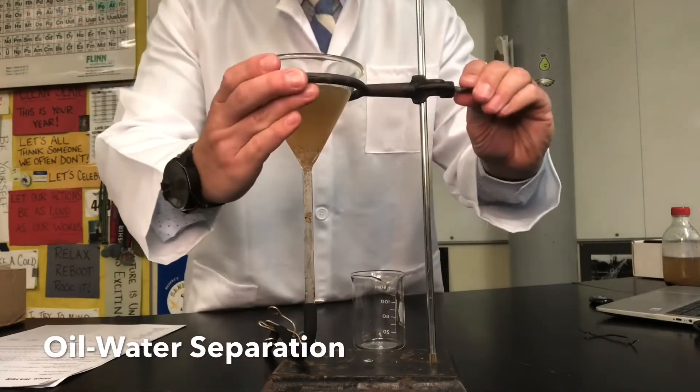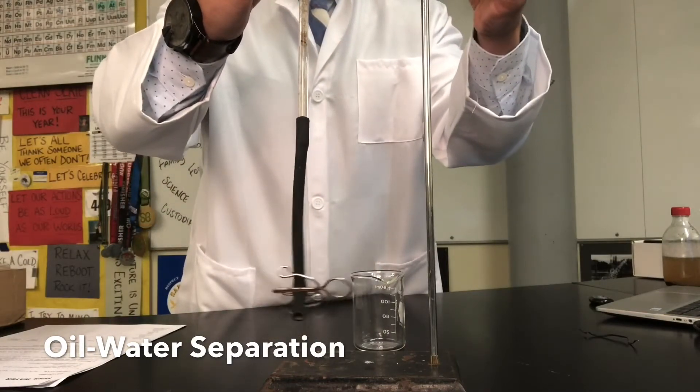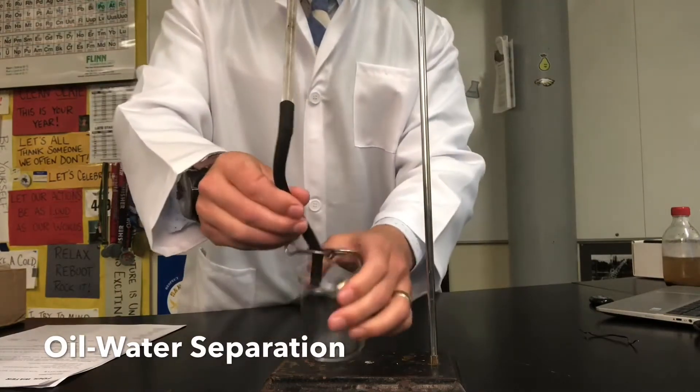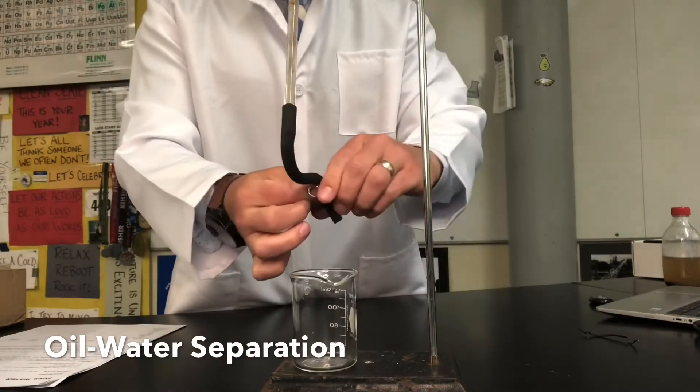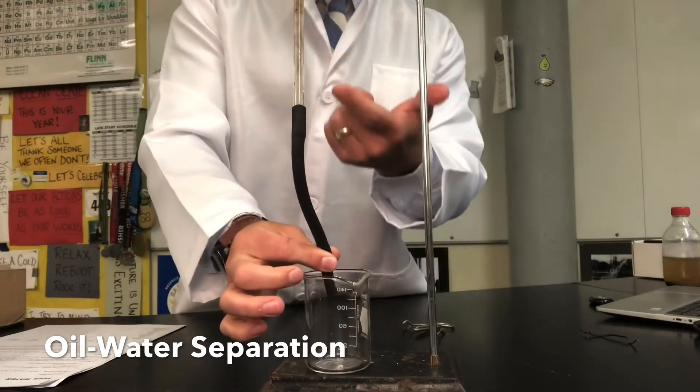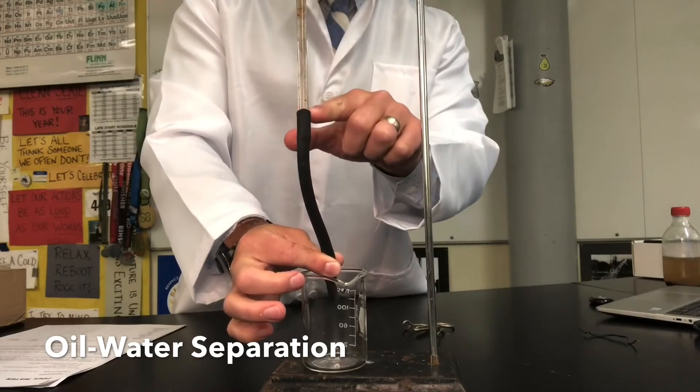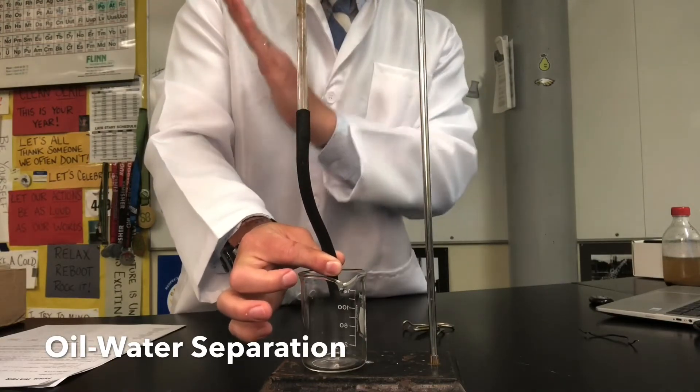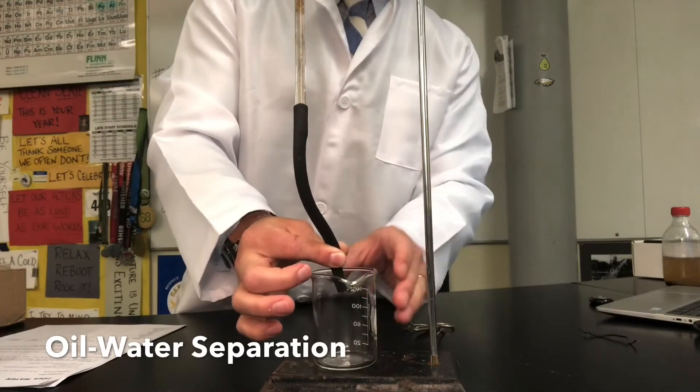So what I'm going to do is I'm going to take my ring stand and raise up my funnel a little bit. I'm then going to put a clean beaker of water underneath here and I'm going to pinch shut and unclamp this. What I'm going to do is slowly let out the water and drain it out but as soon as I get towards the bottom here with the oil I'm going to pinch it shut and separate the oil out. So that's the whole idea of this physical separation.